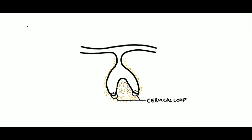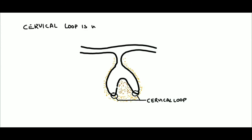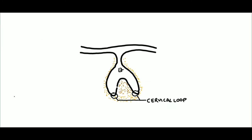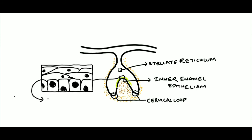This is the cervical loop. The cervical loop is where the inner enamel epithelium and the outer enamel epithelium meet. We can see here the inner enamel epithelium and the outer enamel epithelium meeting. Within the enamel organ, a few epithelial cells between the stellate reticulum and the inner enamel epithelium differentiate into a layer of spindle-shaped cells known as the stratum intermedium.